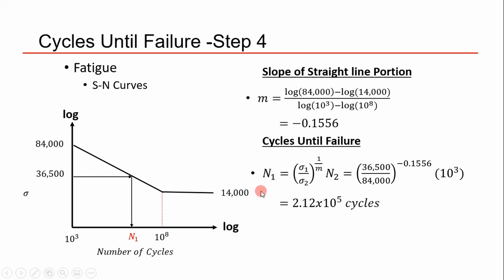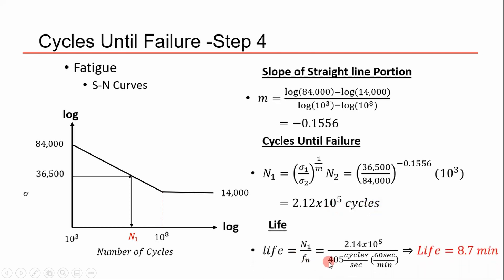We get our number of cycles, then determine life using our natural frequency of 405 hertz, converting to minutes. The predicted life turns out to be 8.7 minutes. Analytically, this transistor will not survive under the given test circumstances.